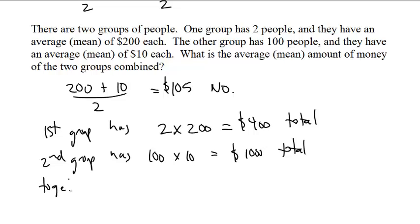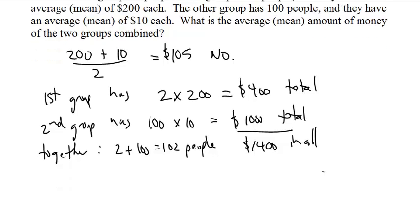So together, we have 2 plus 100, which is 102 people, and we have $1,400 in all. I don't know how it's distributed, but I can tell you exactly how much money they have.